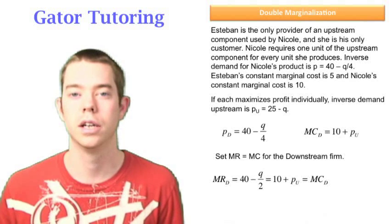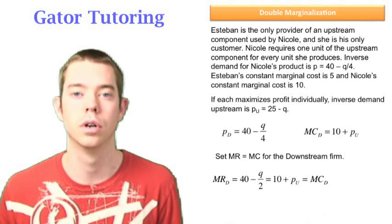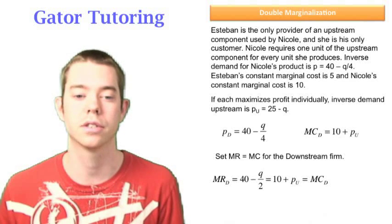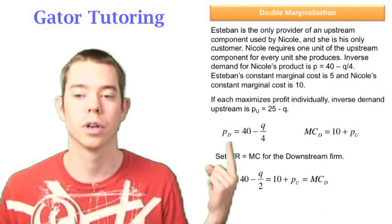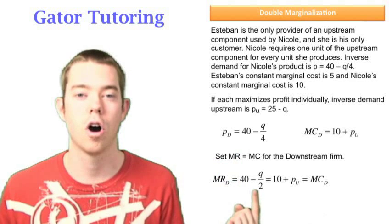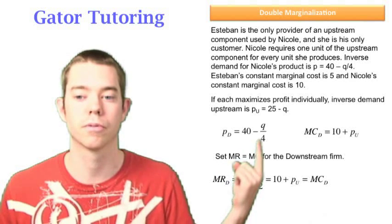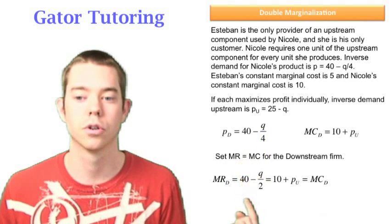So marginal revenue is just 40 minus Q over 2. Notice all we did to get from price, which was 40 minus Q over 4, to marginal revenue, or to get from here to here, all we did was double the slope. We went from one-fourth Q to one-half Q.